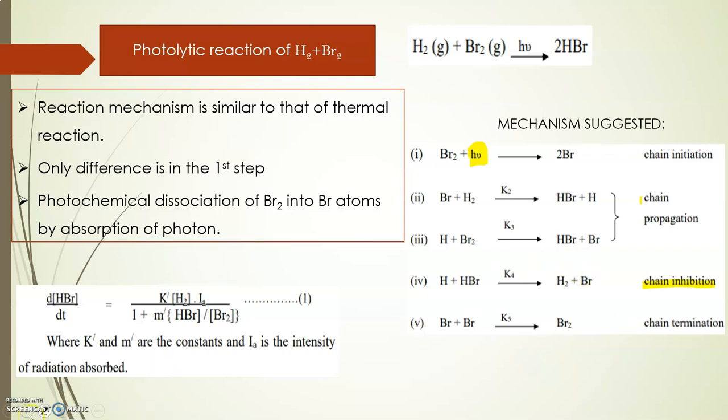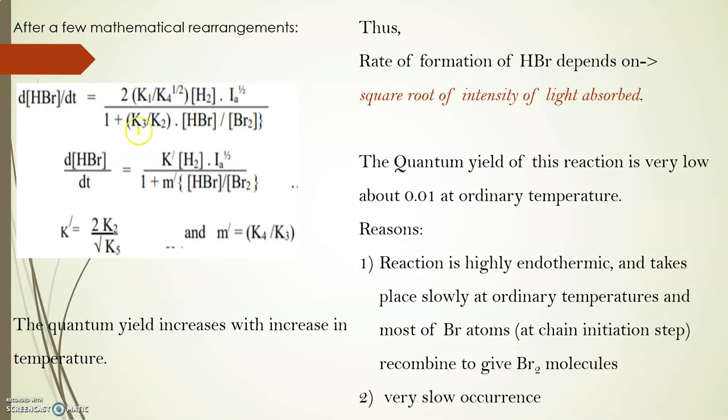It can be observed that the rate of formation of HBr depends on—here, d by dt of HBr—it depends on the square root of intensity of light absorbed. At room temperature, the quantum yield for this reaction is extremely low. This is because the reaction is highly endothermic and the chain propagation step cannot continue.